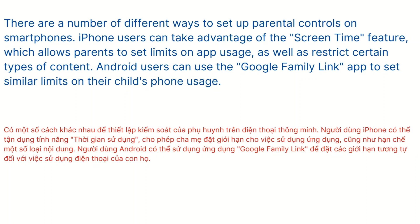There are a number of different ways to set up parental controls on smartphones. iPhone users can take advantage of the Screen Time feature, which allows parents to set limits on app usage as well as restrict certain types of content. Android users can use the Google Family Link app to set similar limits on their child's phone usage.